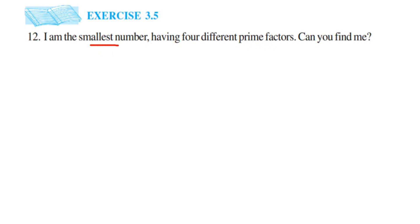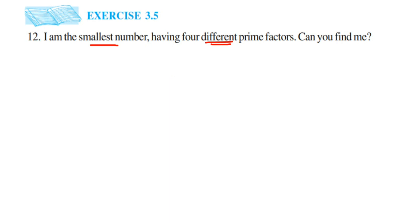Since they want the smallest number expressible with prime factors, and different prime factors are required, we take the four smallest prime numbers. The smallest prime number is 2, then 3, then 5, and then 7. So our four different prime factors are 2, 3, 5, and 7.